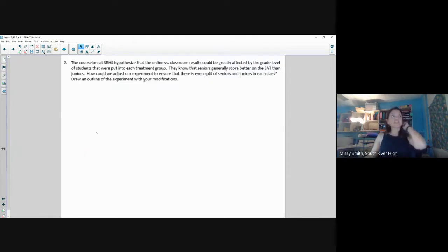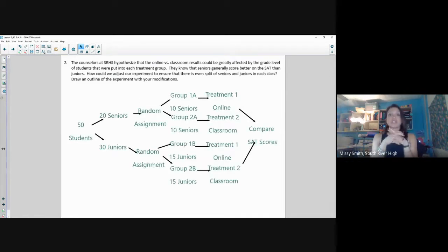We took this a step further in class by thinking about the grade level the students were in. Now on your screen, you see how we could block by the grade level, 20 seniors, 30 juniors, and then I do the random assignment. Remember, blocking is a way to help control a possible confounding variable, such as grade level in this instance. But notice, I still have comparison, I still have randomization, I have control, and I have replication in all of my treatment groups. You have to have those things in a well-designed experiment.